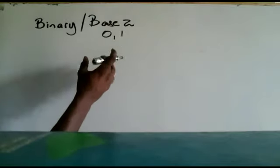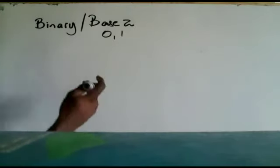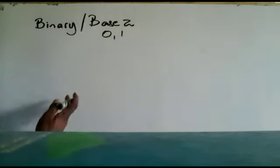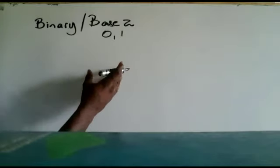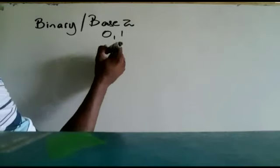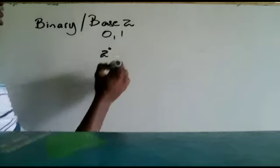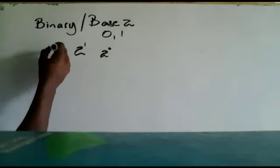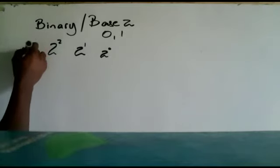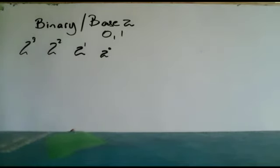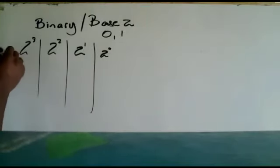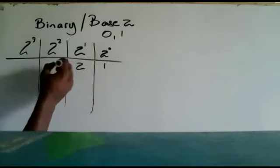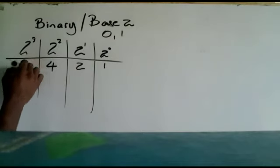We need to understand that there's a table of values representing each place value in the base 2 world. The place values are based on powers of 2: 2 to the 0, then 2 to the 1, then 2 to the 2, then 2 to the 3, and so on. So 2 to the 0 is 1, 2 to the 1 is 2, 2 to the 2 is 4, and 2 to the 3 is 8.